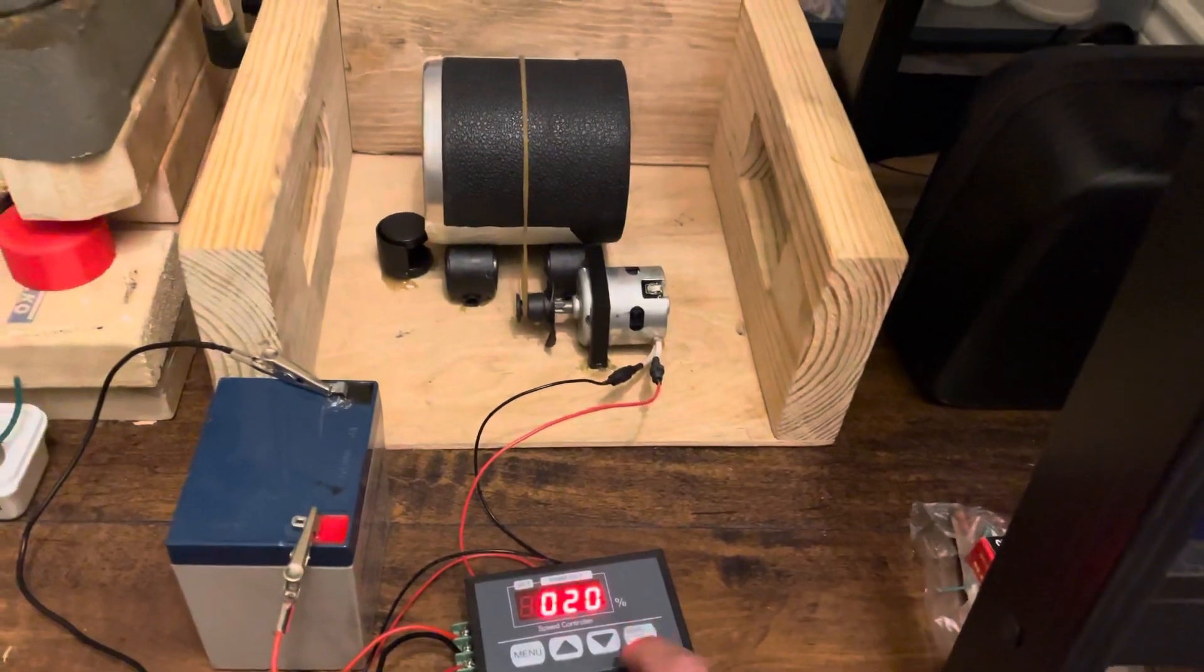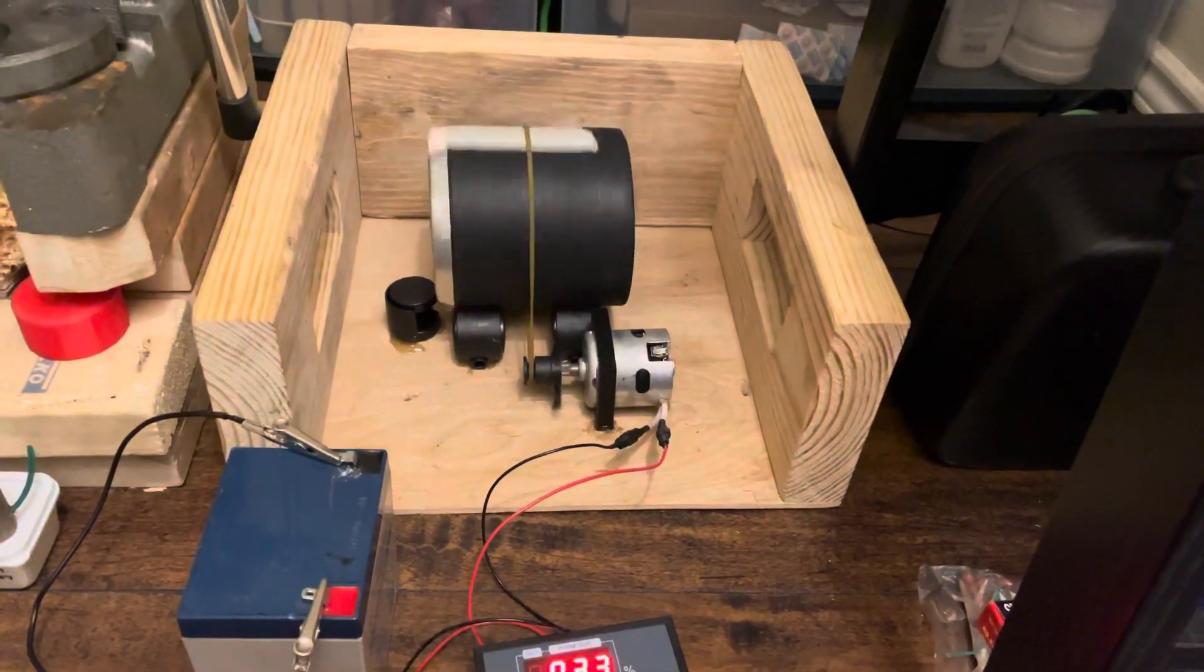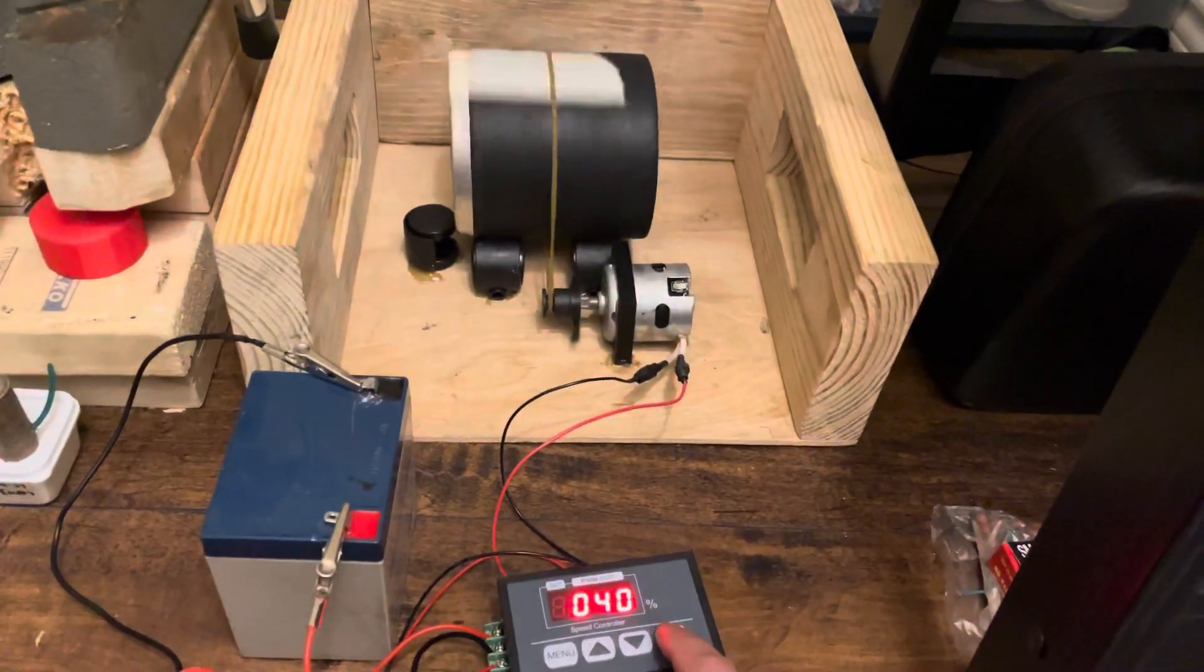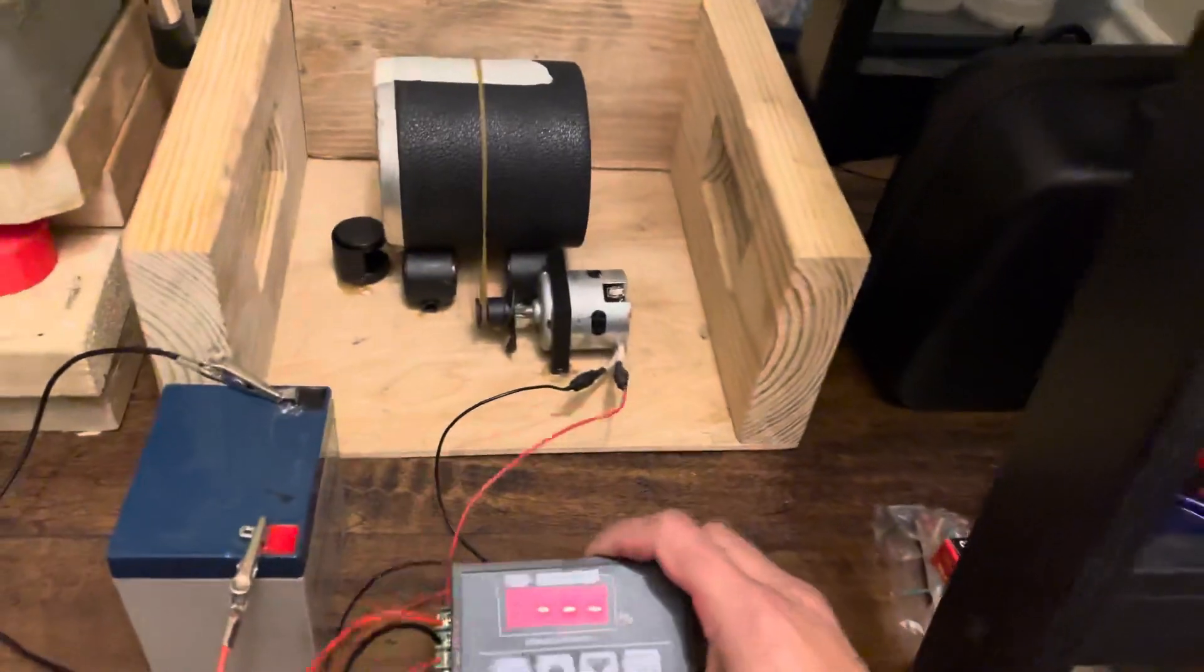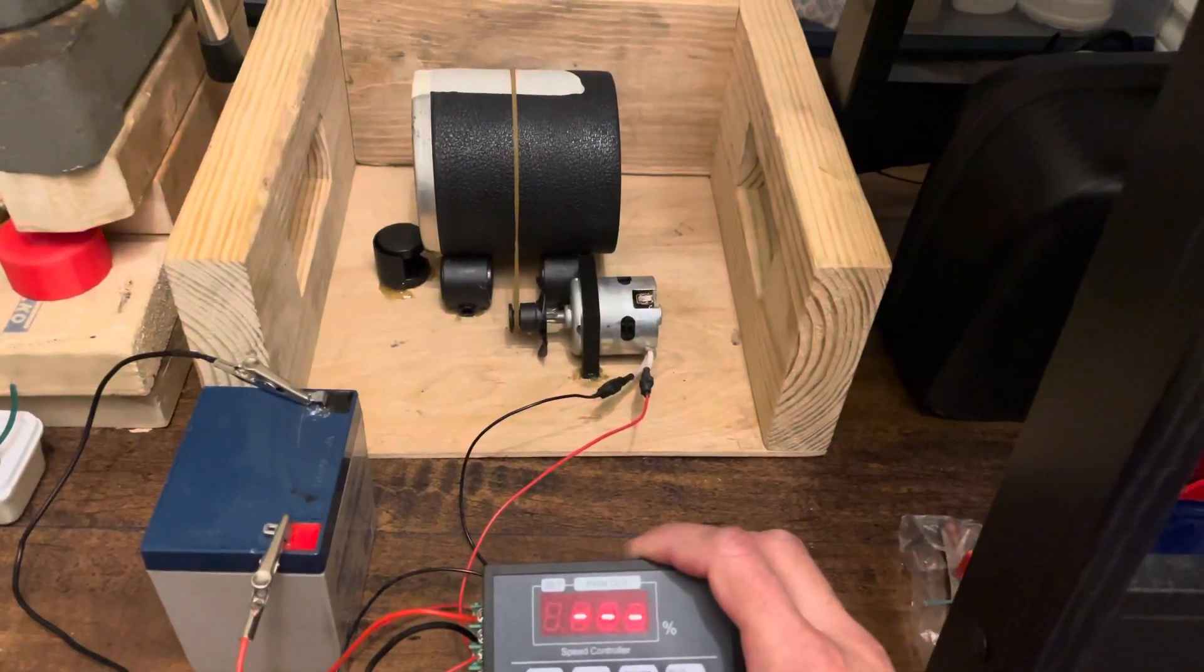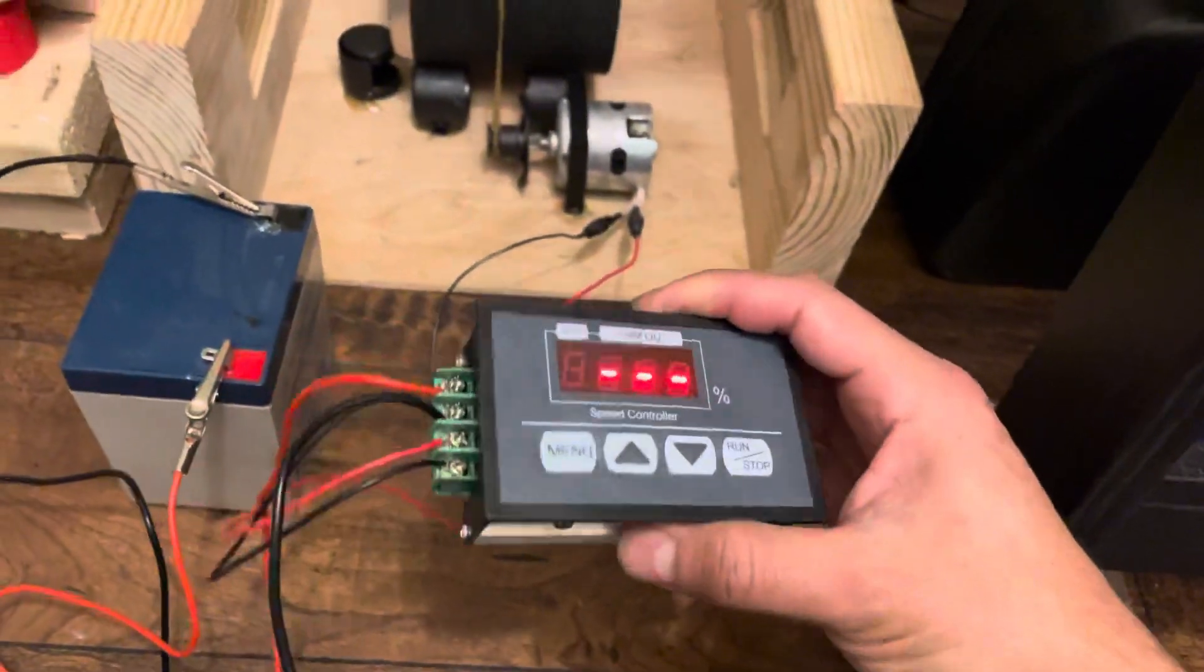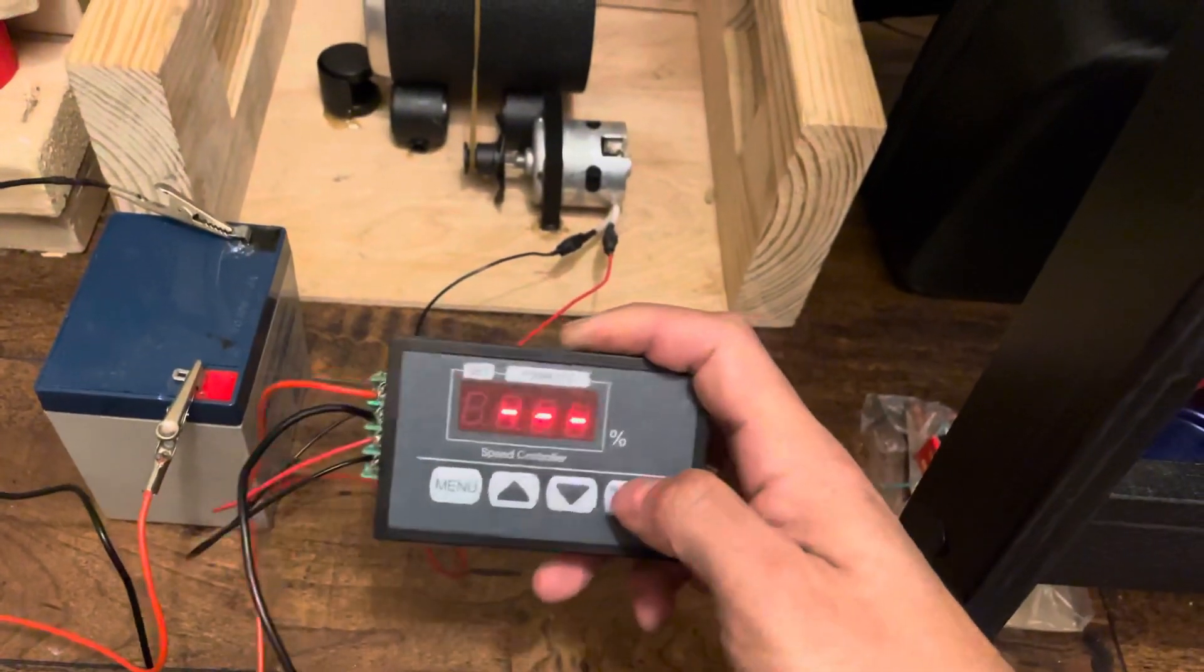As you can see, it changes the speed of the motor, so I can get that perfect ball-milled black powder depending on how fast I want to go, how slow I want to go. Like I said, this thing's off Amazon. It just has the voltage going in, voltage going out, and then this just takes care of the speed of the motor or the power output. And that's pretty much it.